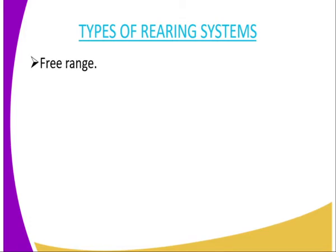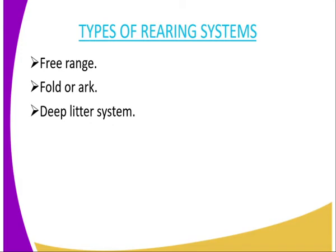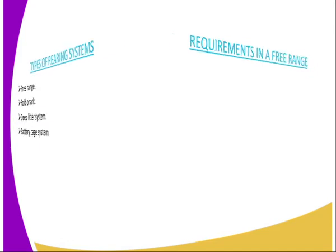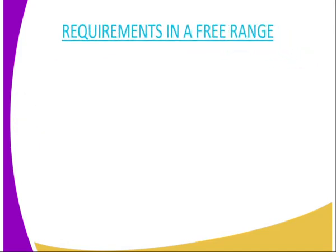Moving to the types of rearing system, we have several of them. The first one is free range system, the second one is the fold or arc, the third one is the deep litter system, and the fourth is the battery cage system.